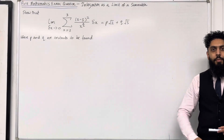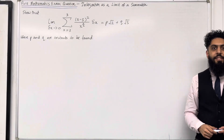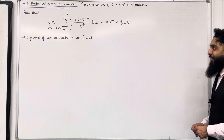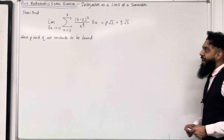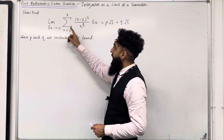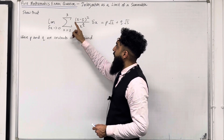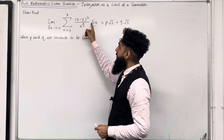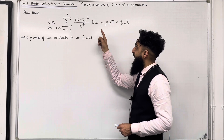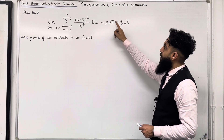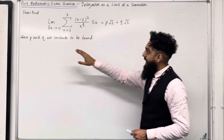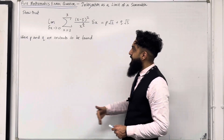Welcome back. In this YouTube video, I'm looking at your mathematics exam question on integration as a limit of a summation. Let's have a look at the question. Show that the limit as delta x tends to 0 of the sum from x equal 2 to x equal 3 of (x minus 3) squared over x to the power 3/2, delta x, is equal to p root 2 plus q root 3, where p and q are constants to be found.